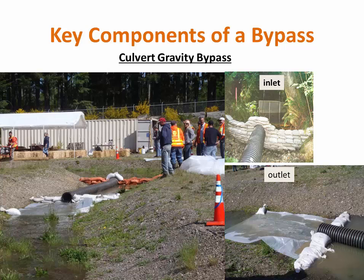Another method is a culvert gravity bypass. This method is generally preferred because you don't need to worry about maintaining pumps over a weekend or holiday. The inlet and outlet are typically sandbagged and work better if wrapped in plastic sheeting to prevent leaking. The outlet has plastic at the culvert end to prevent erosion, and a cofferdam prevents backwater at the site.